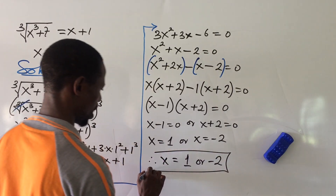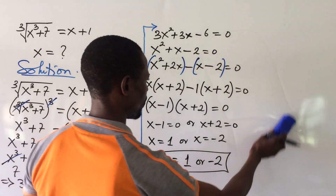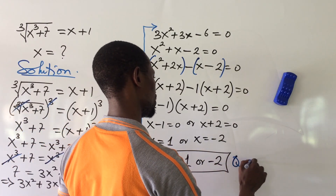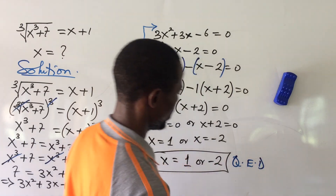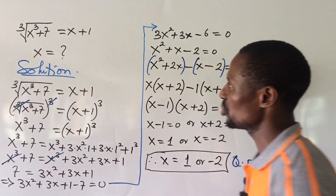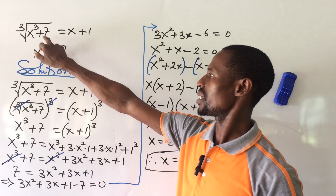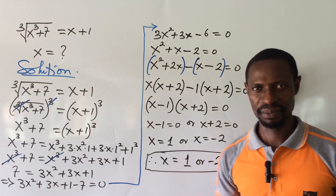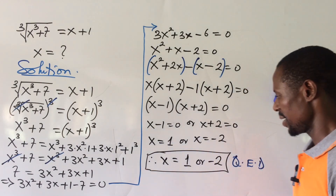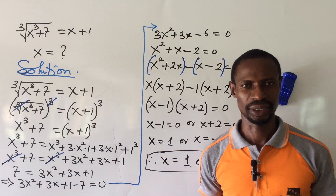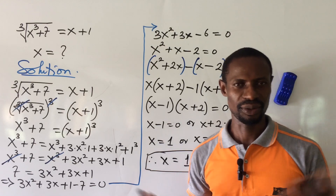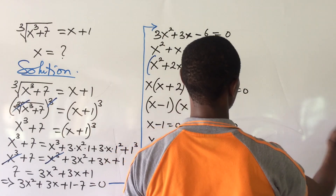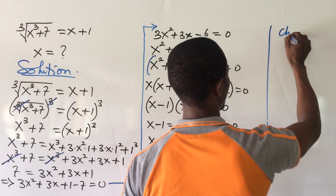Therefore x = 1 or x = −2. These are the two possible values. If you put these values into our original equation they should give the correct answer — let's verify to be sure.